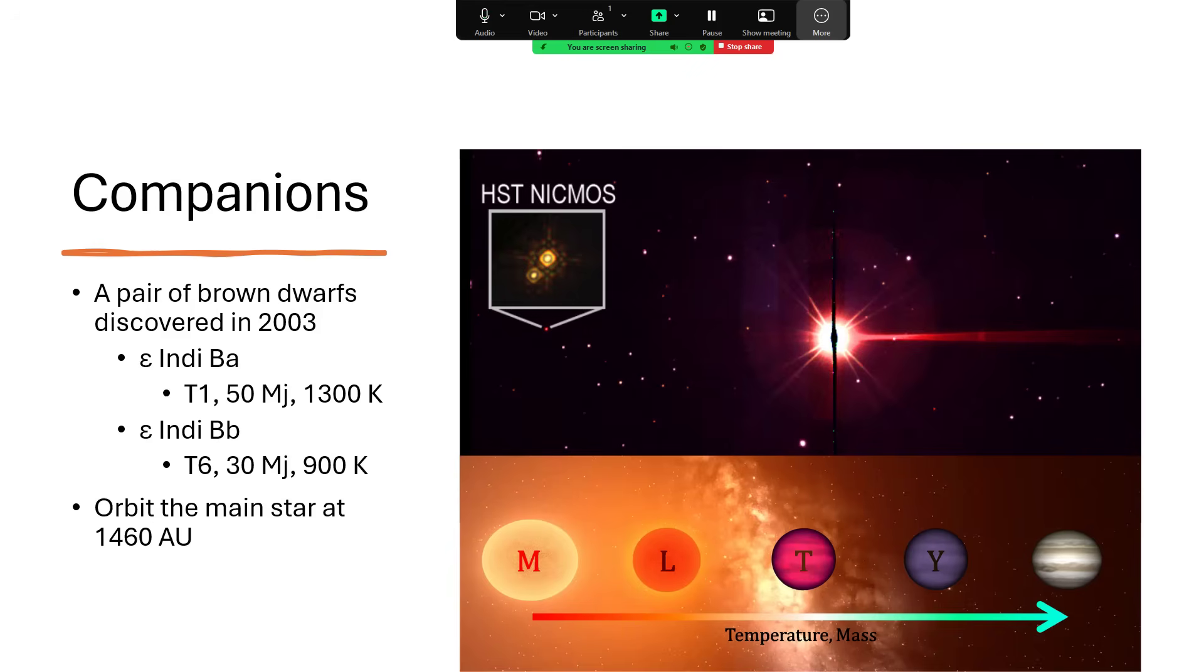These orbit each other, and then the pair orbit around the main star at a distance of 1,460 astronomical units, so a reasonable distance.